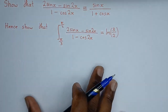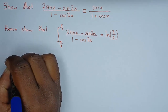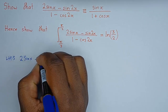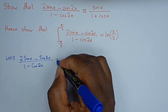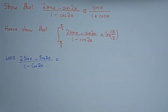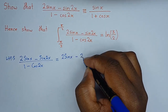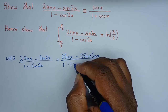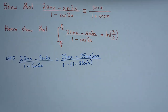For the identity, we start by working with the left-hand side. What we have is: (2 sin x − sin 2x) / (1 − cos 2x). We can clearly see double angles, so we bring in double angle identities. The double angle identity for sine is: sin 2x = 2 sin x cos x. For cosine, we use: cos 2x = 1 − 2 sin²x.